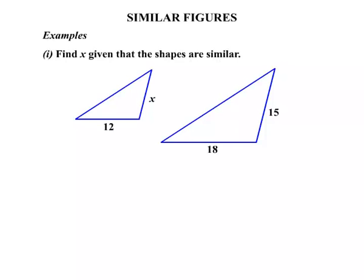Examples. We need to find x given that the shapes are similar. Well, the sides are in proportion. So let's match up the corresponding sides. The x matches up with the 15, so we're going to write x over 15. The 12 matches with the 18, so we write that it equals 12 over 18. So there's our equation there.